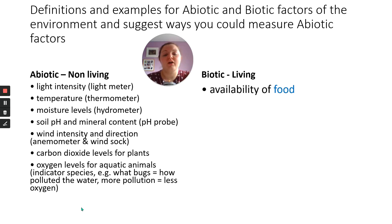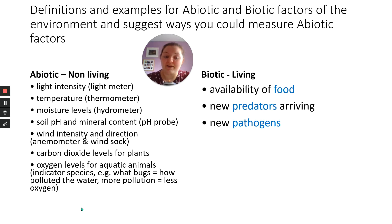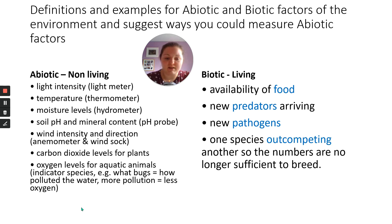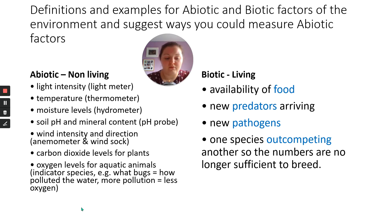Biotic factors are kind of the opposite — they are the living things in that area, that environment. So how much food is available? Are there new predators? Are there new pathogens to make them sick and spread diseases? Are there one species out-competing another to the point where there's not enough numbers for them to successfully breed? An example of this in the UK is grey squirrels out-competing red squirrels, which are now confined mostly to very small pockets of the United Kingdom.